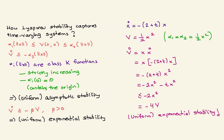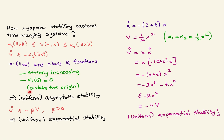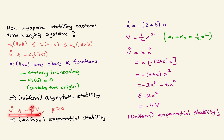I'd like to show how Lyapunov stability captures time-varying linear or nonlinear systems. Find a positive-definite Lyapunov function V, possibly depending on time and state, that is lower and upper bounded by class-K functions — strictly increasing functions passing through the origin. When you compute V-dot and obtain a negative class-K upper bound, you can conclude uniform asymptotic stability, since it captures time variations. If V-dot is less than or equal to a negative constant times V, you get uniform exponential stability.